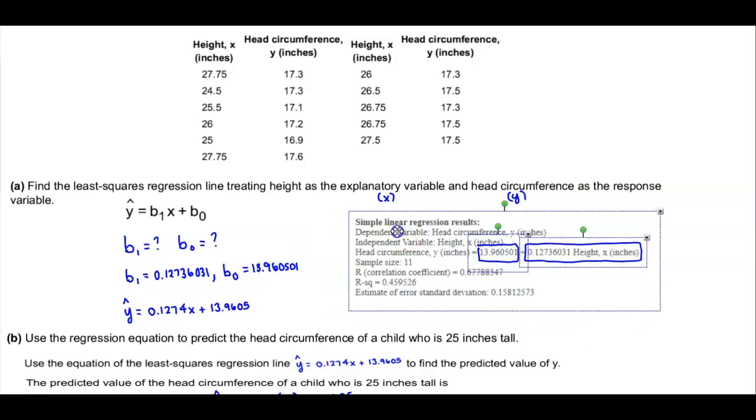So now that we have that data, now we can plug it into the equation. So if we round this to four decimal places, we're going to have Y, which is equal to 0.1274X plus the Y intercept rounded to four decimal places, which is 13.9605.